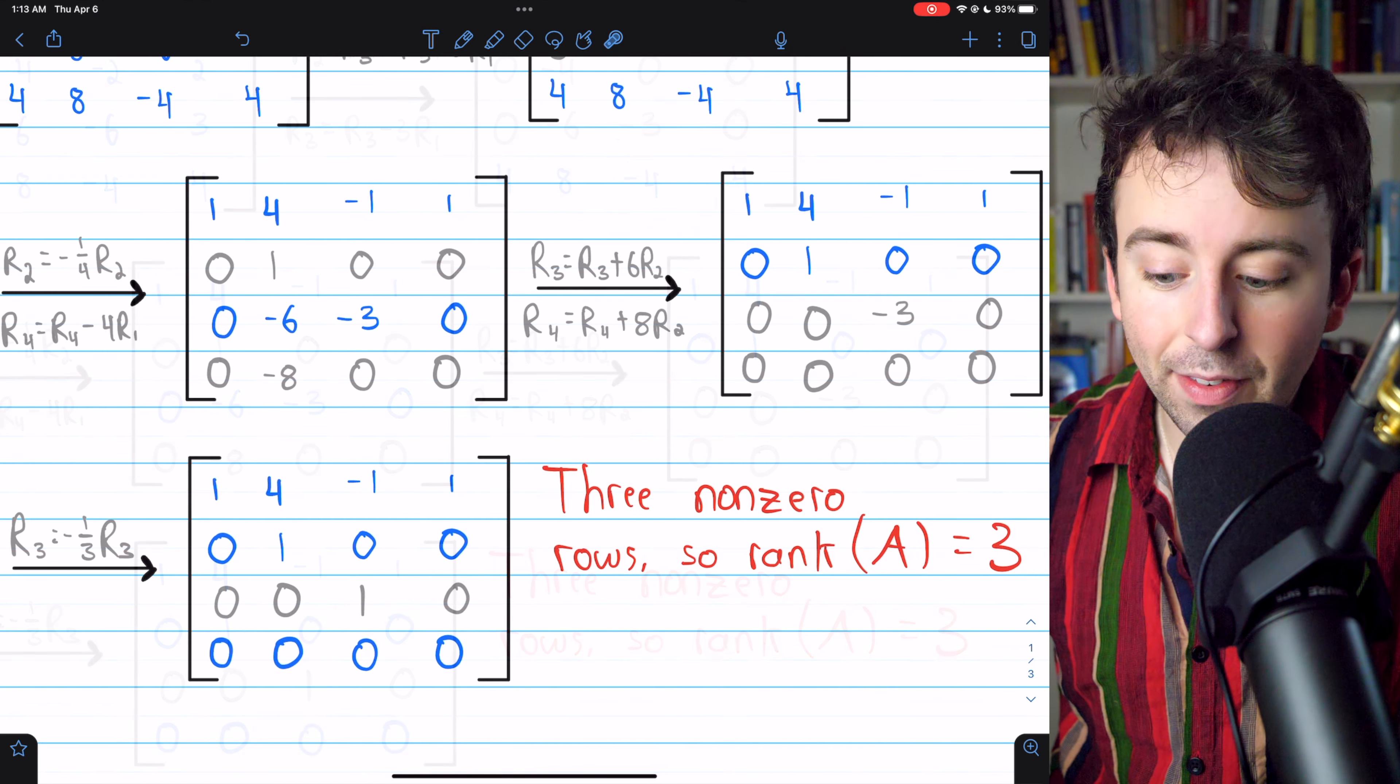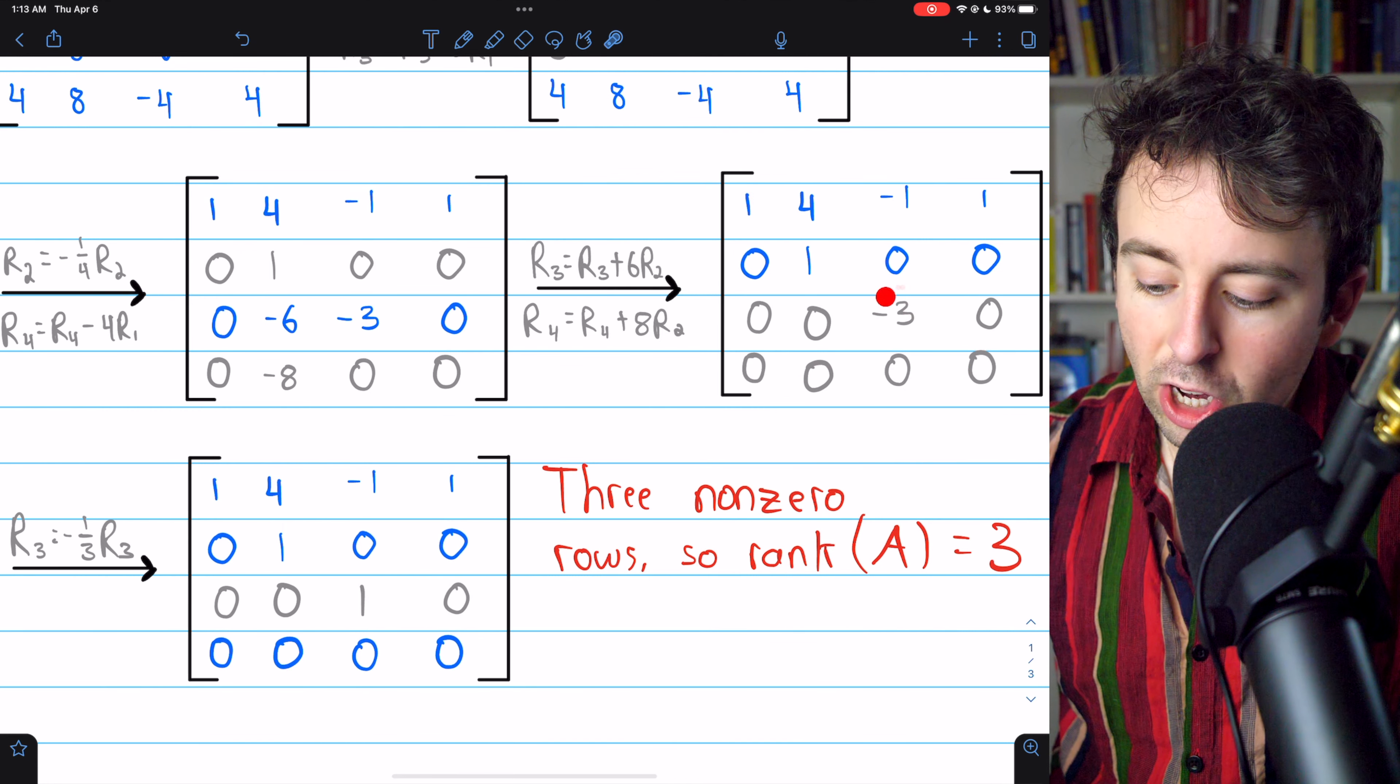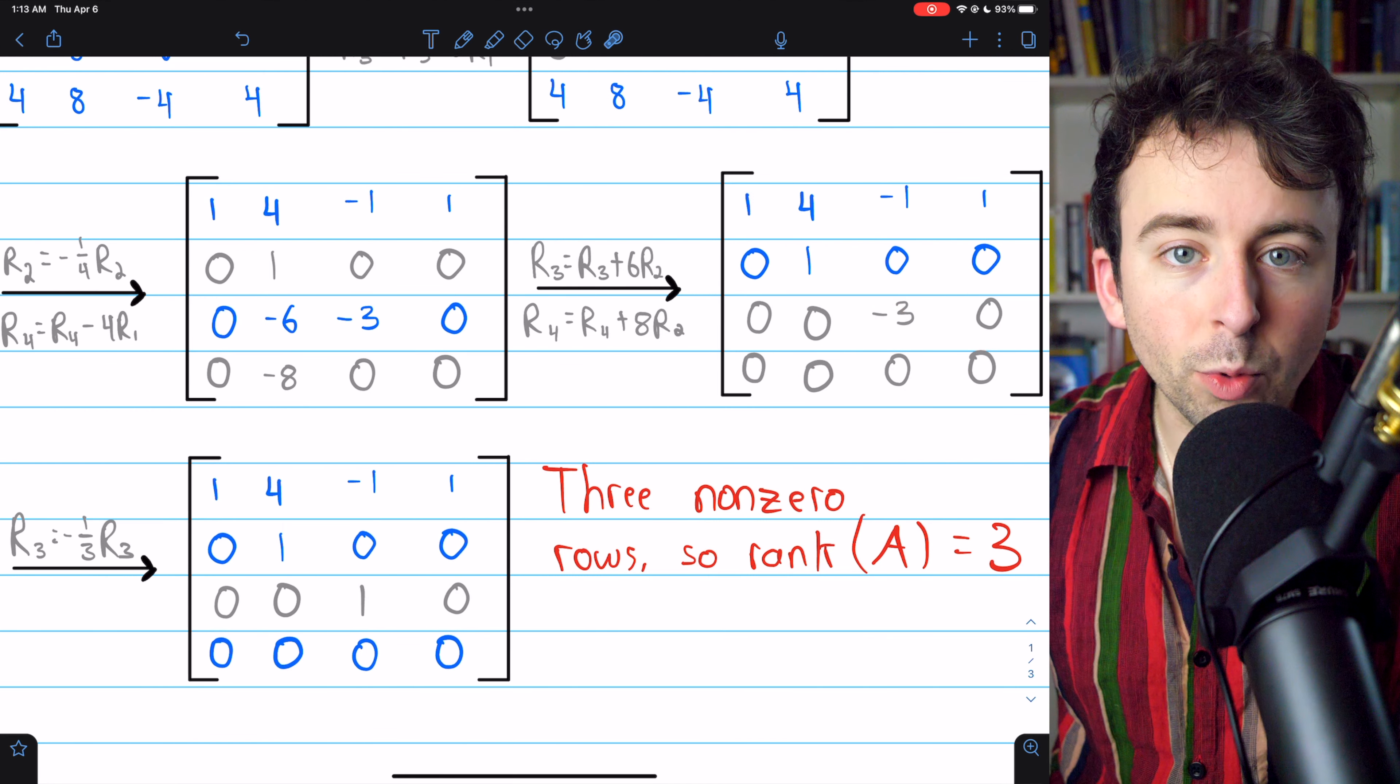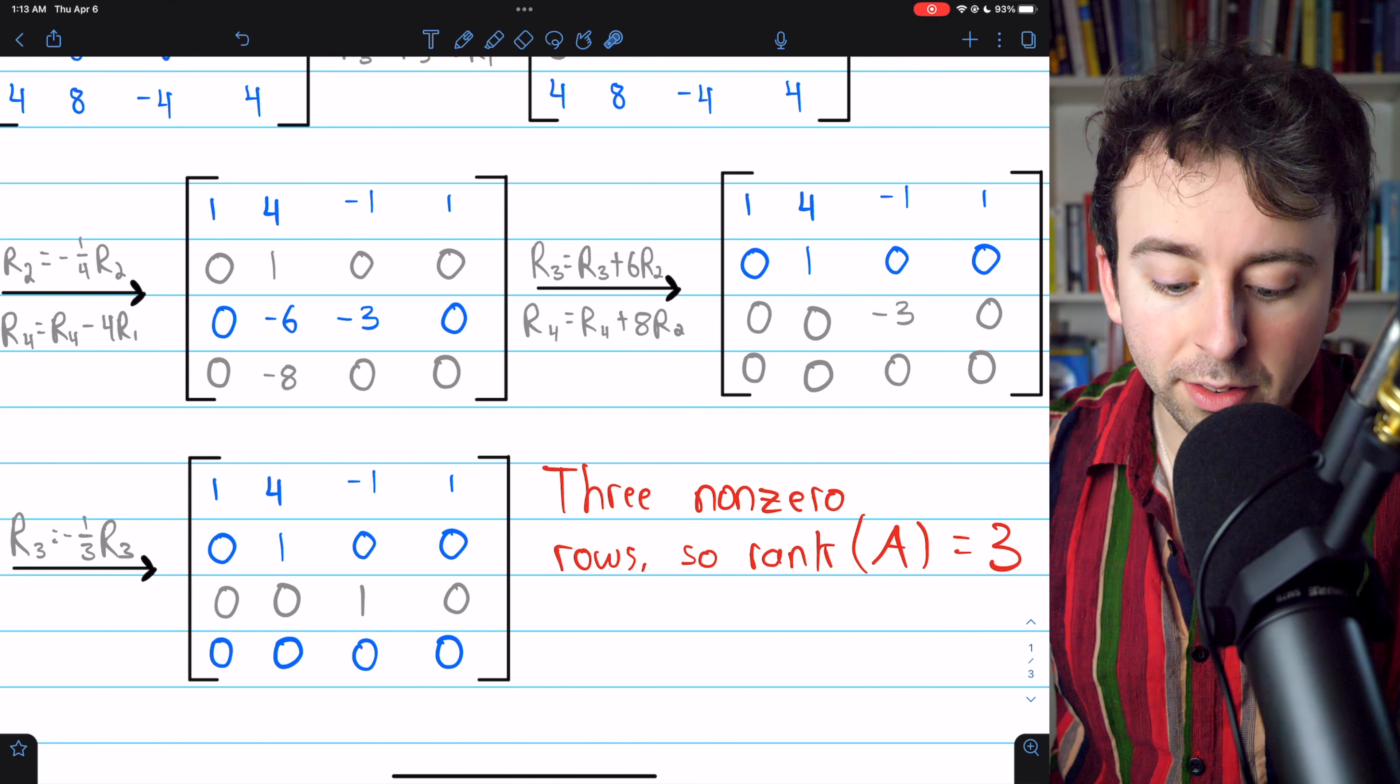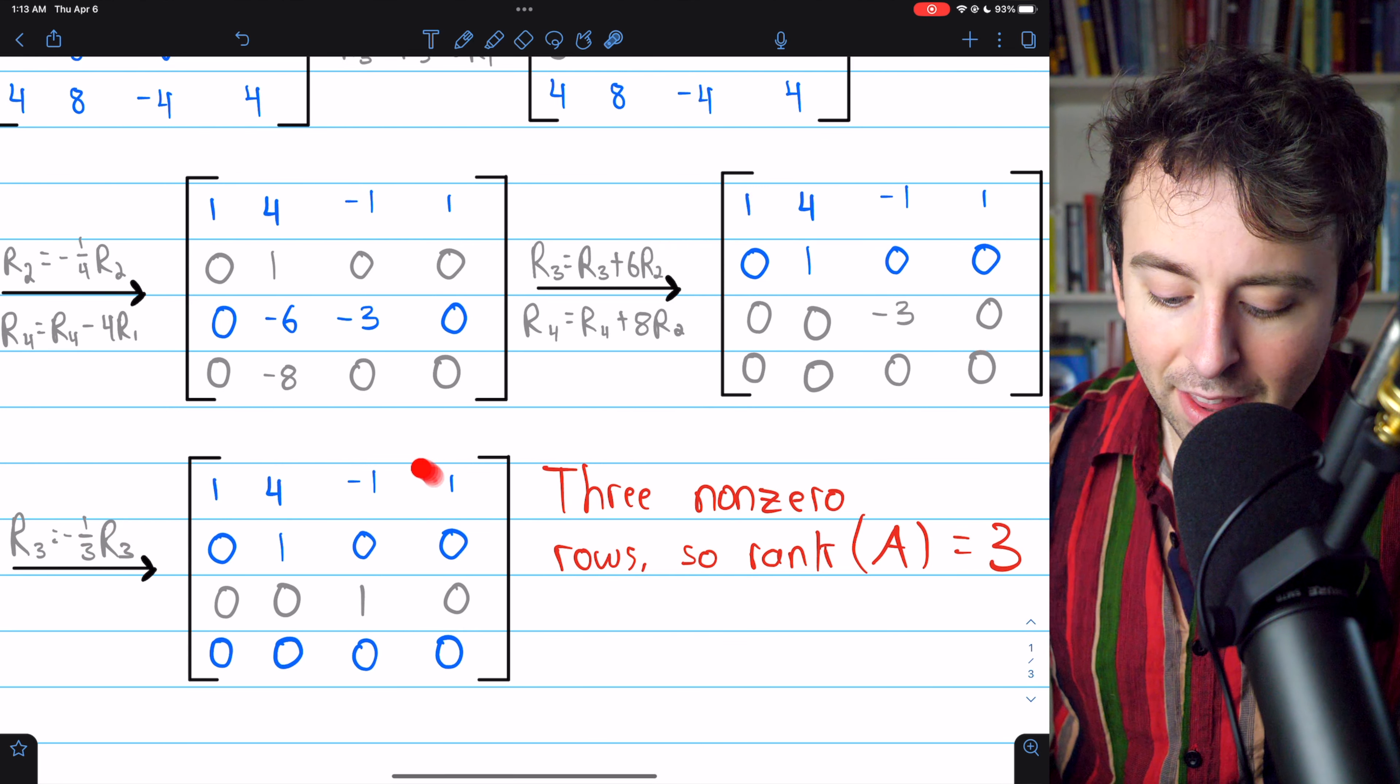One more step. We have a zero row in the bottom of the matrix. That's fine. Then, we just need to change this leading entry of negative three in row three to positive one. So, to do that, we multiply row three by negative third. And then, we get here.